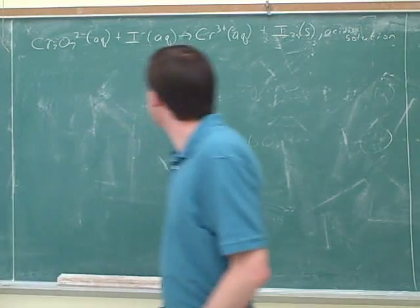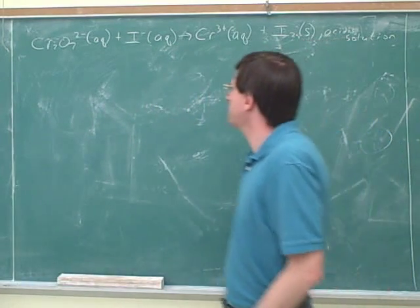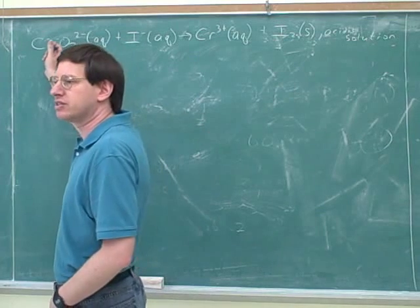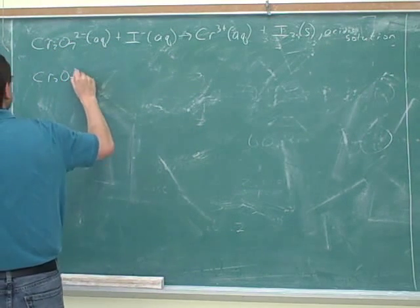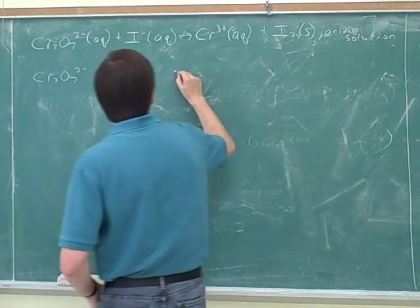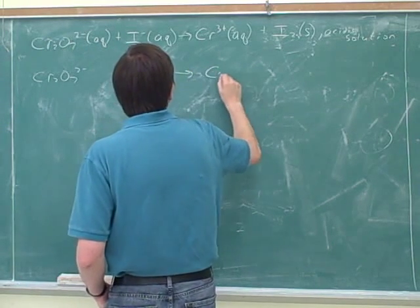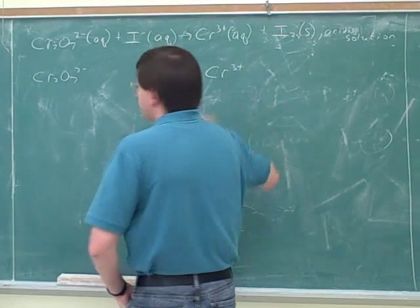To divide into two half reactions. So what would the half reactions be here? Well, one half reaction here would involve the chromium species. So we would have the half reaction with the Cr₂O₇²⁻ and the Cr³⁺.